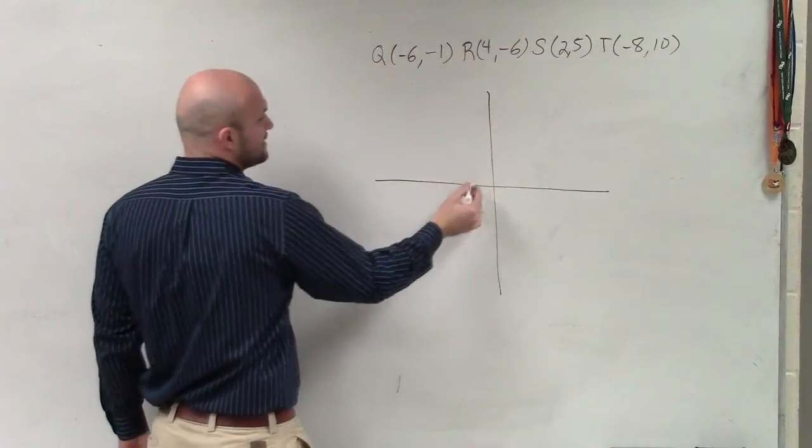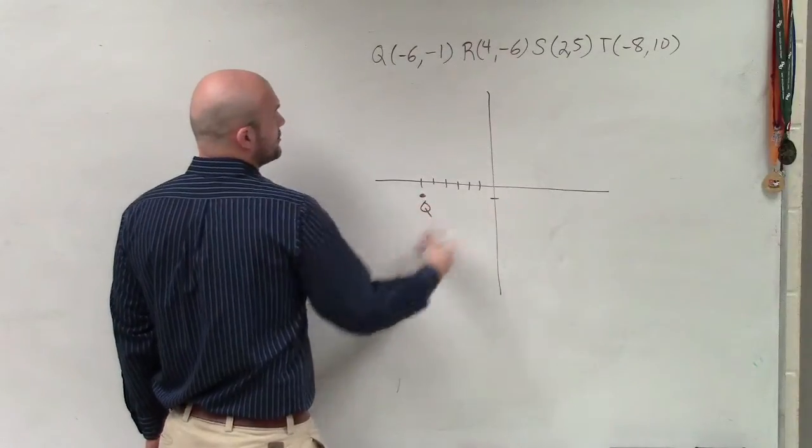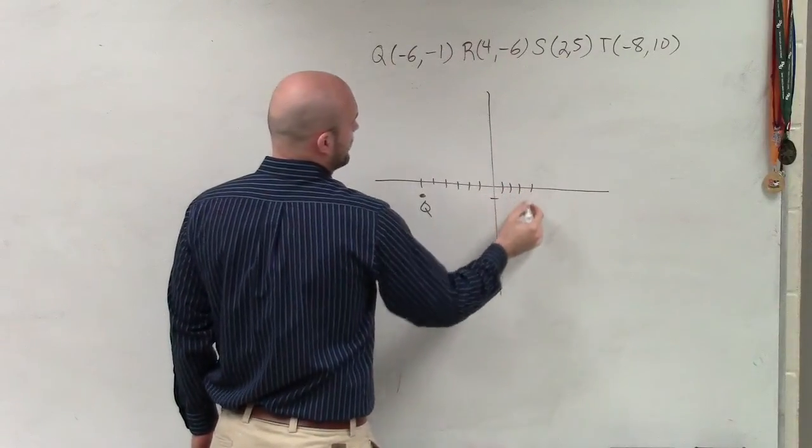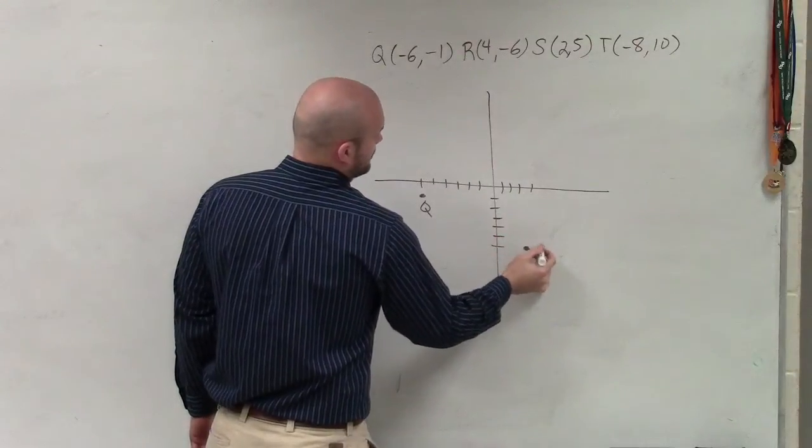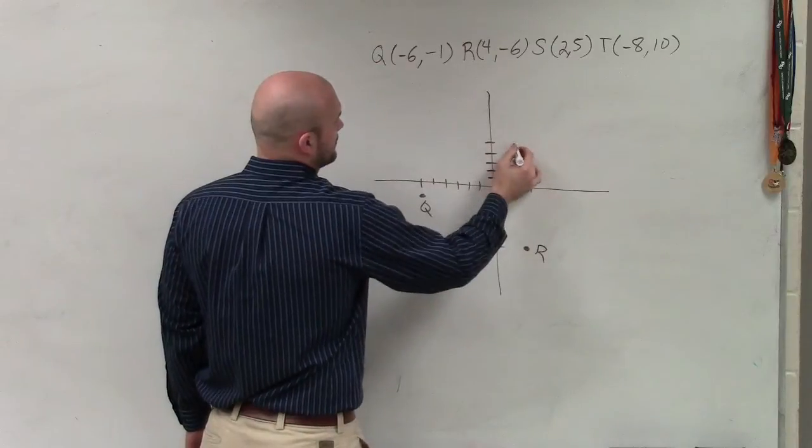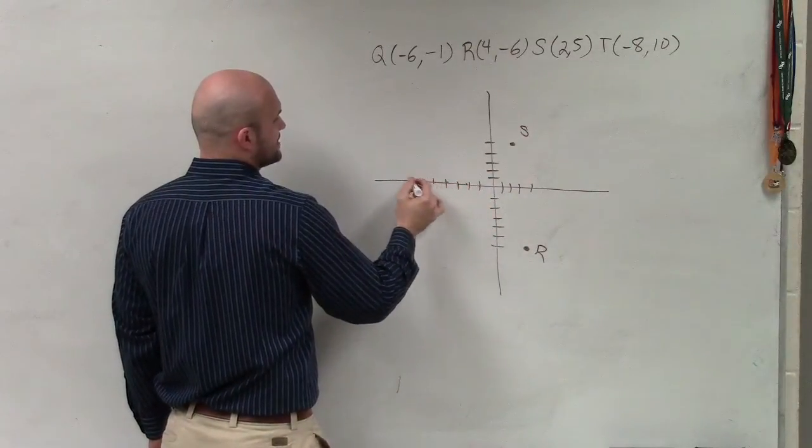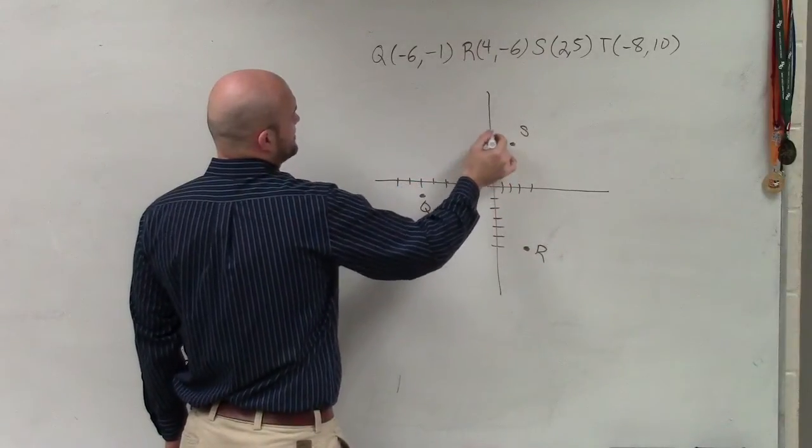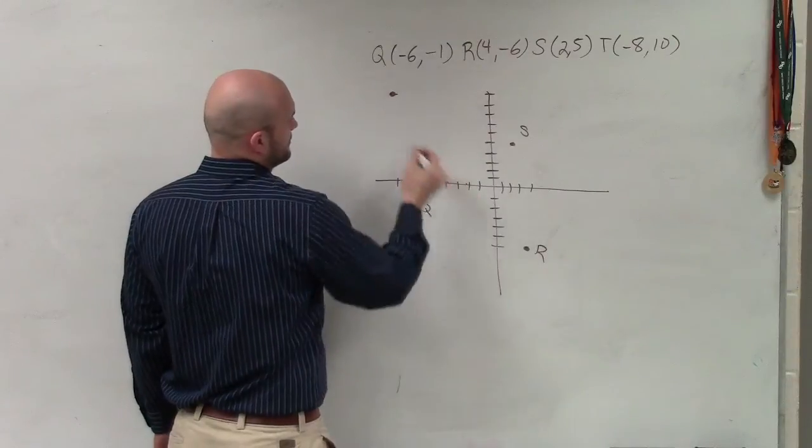So I'm going to plot and label: Q is (6,-1), R is (4,6), S is (2,5), and then T is (-8,10). Looks fun.